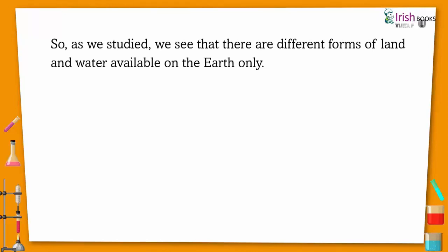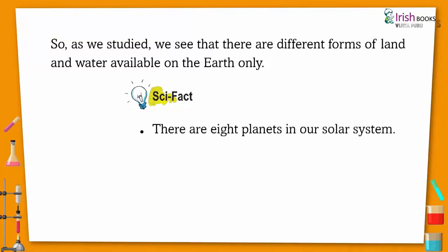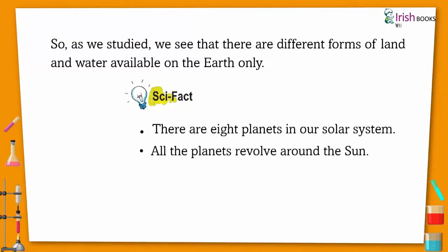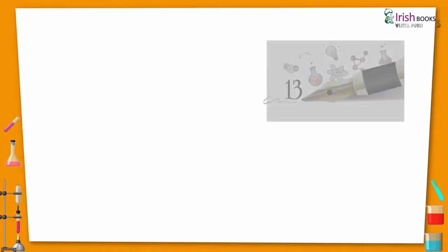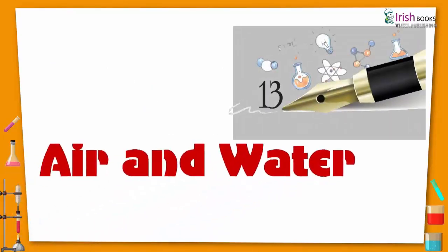So as we studied, we see that there are different forms of land and water available on Earth. There are eight planets in our solar system. All the planets revolve around the Sun.